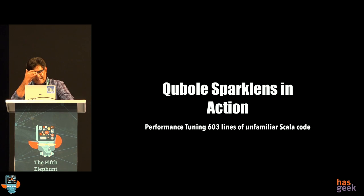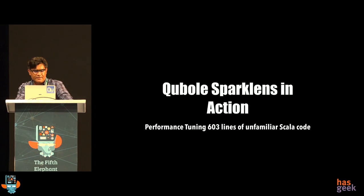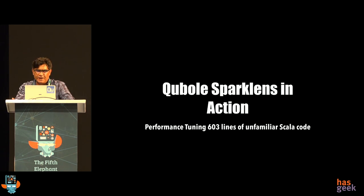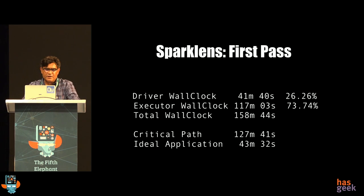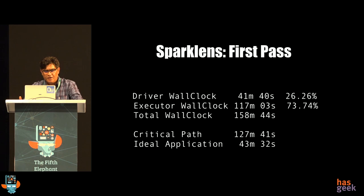The example I'm going to give happened last year during a customer POC. We got 603 lines of Scala code and someone said it's taking a lot of time — can you optimize it? We didn't know anything about the code, the schema, or what the person was doing. So we'll walk through how the tuning really happened — how can we tune without knowing too much about the application. We ran Spark Lens on this application. It takes 158 minutes to run. 41 minutes are spent on the driver, and 117 minutes are being spent on the executor side. The critical path is 127 minutes.